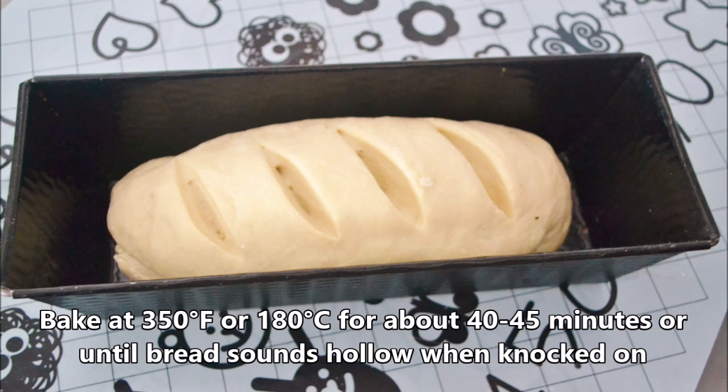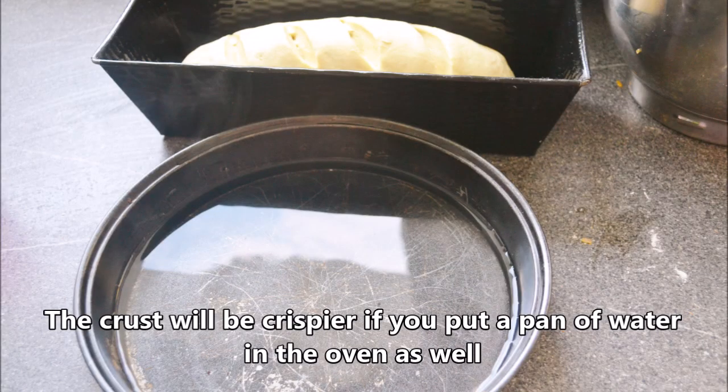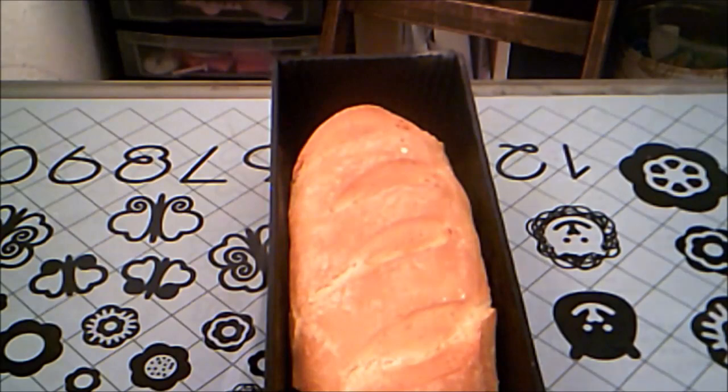Finally bake at 350 degrees Fahrenheit or 180 degrees Celsius for 40 to 50 minutes or until knocking on the crust sounds hollow. If you want a crispy crust bake your bread with a pan of water in the oven as well.